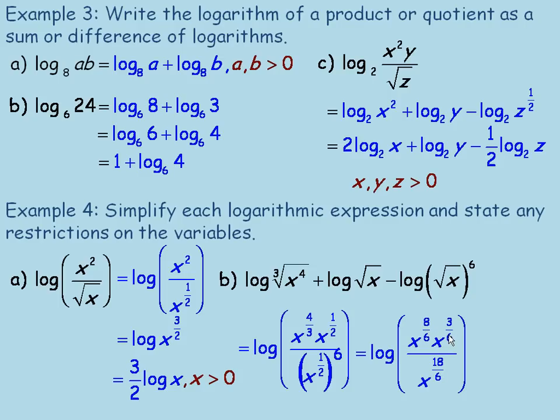So we have 11/6 minus 18/6, and that's negative 7/6. Again, like I did earlier, I brought the power, the 3 halves or exponent, down in front. So I would simplify that to negative 7/6 log x. And the restriction here, again, x would have to be greater than 0. And that's the end of the lesson.